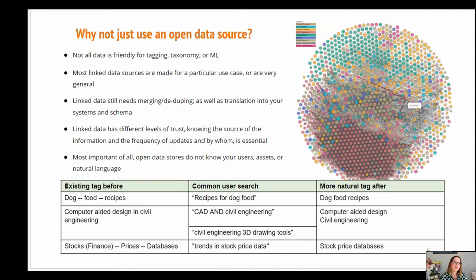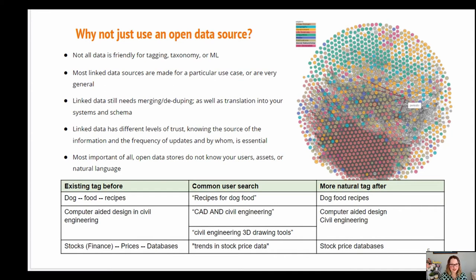You also have to keep in mind that if the data source is open, like Wikidata, you're going to get the good, the bad, and the ugly. You have to be very careful, especially if you're using any of these for machine learning purposes. We all know what happened when someone trained a machine on Twitter. You don't want that to happen — and that is in Wikidata. So be careful.